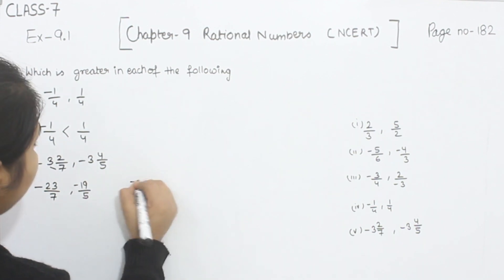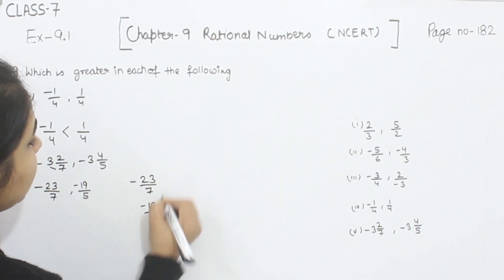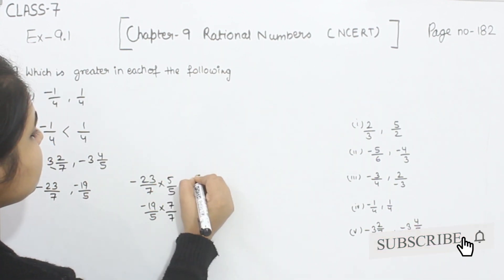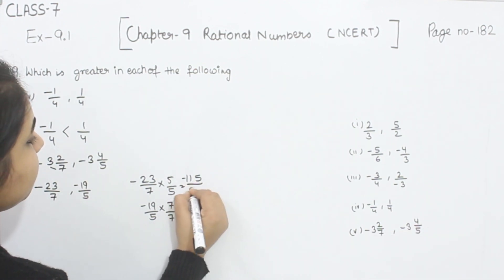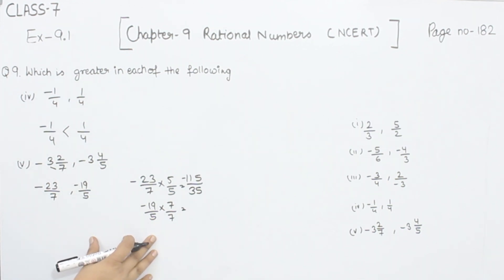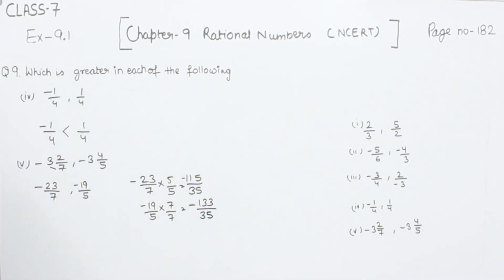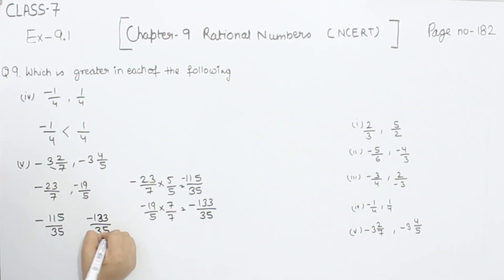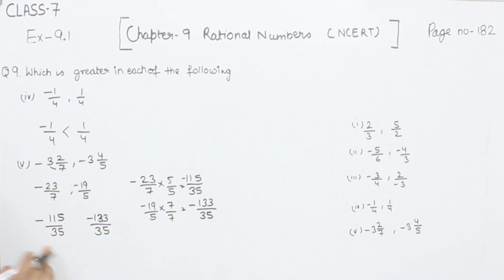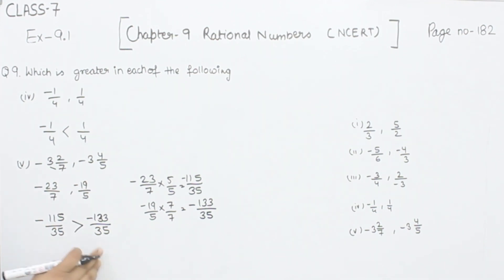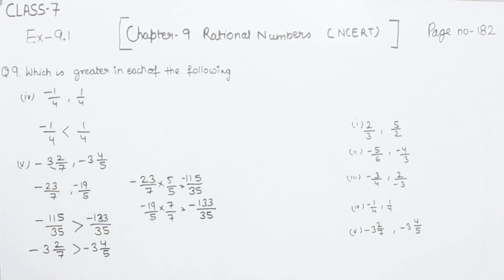Now we will make them comparable by equalizing their denominators, multiplying by each other's denominator. So 23×5=115, giving -115/35. And 19×7=133, giving -133/35. Now comparing -115/35 and -133/35: when we have a negative sign, the greater value has the smaller absolute value. So -115/35 is greater than -133/35. This represents -3 and 2/7 being greater than -3 and 4/5, so -3 2/7 is the greater one.